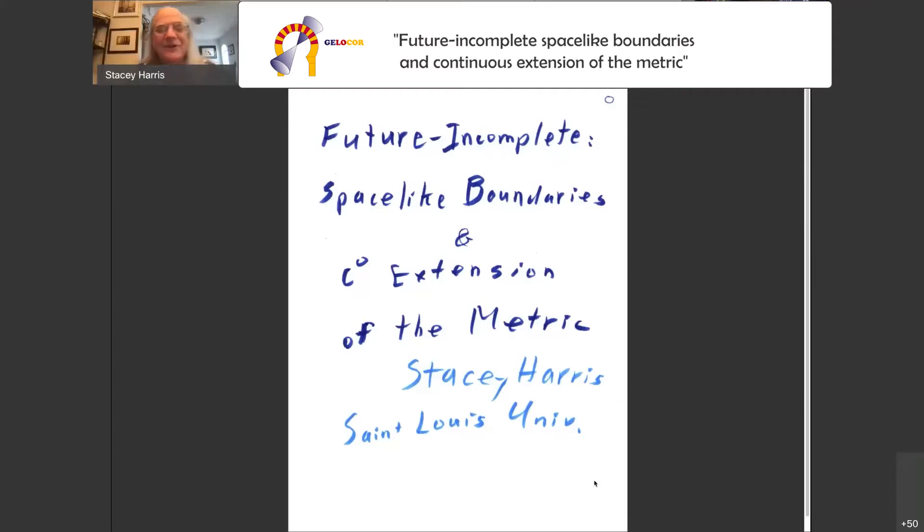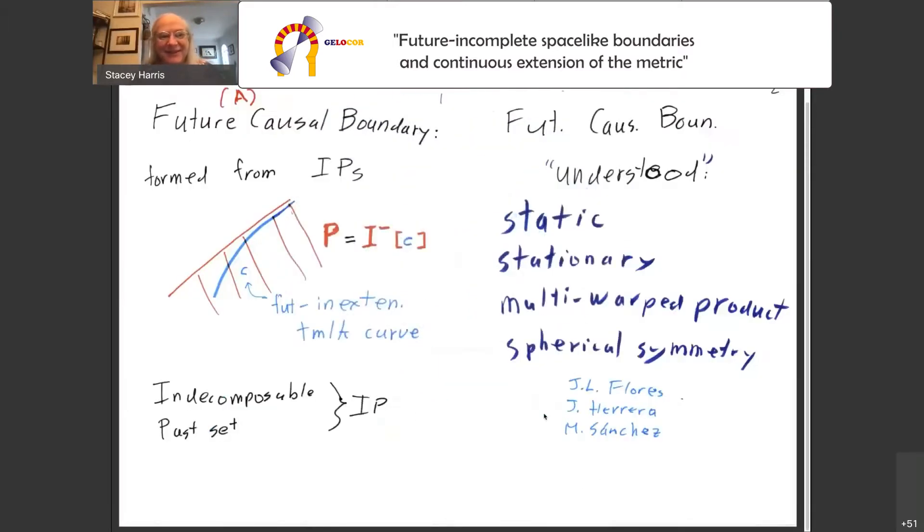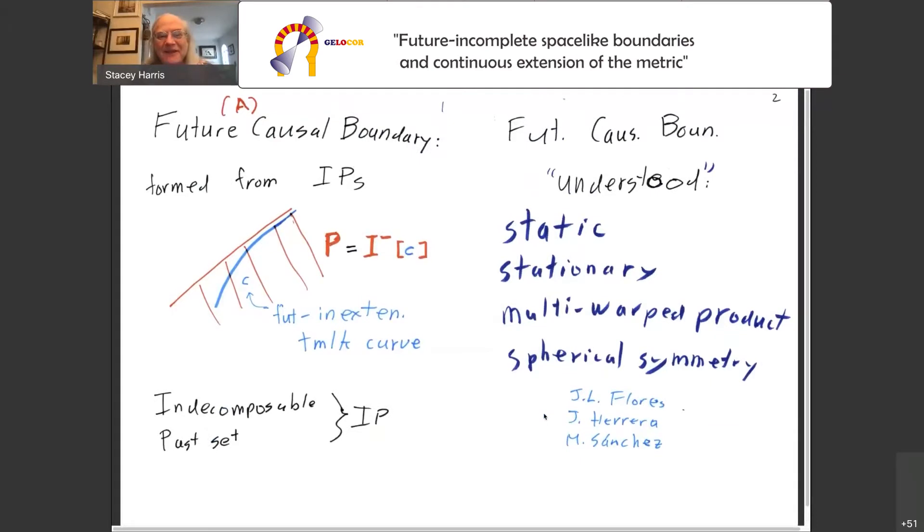I didn't give quite the correct punctuation. It should have been future incomplete colon, spacelike boundaries and C0 extension of the metric. This is in two parts. Part A is the long one, talking about the boundary, and then Part B about extension of the metric.